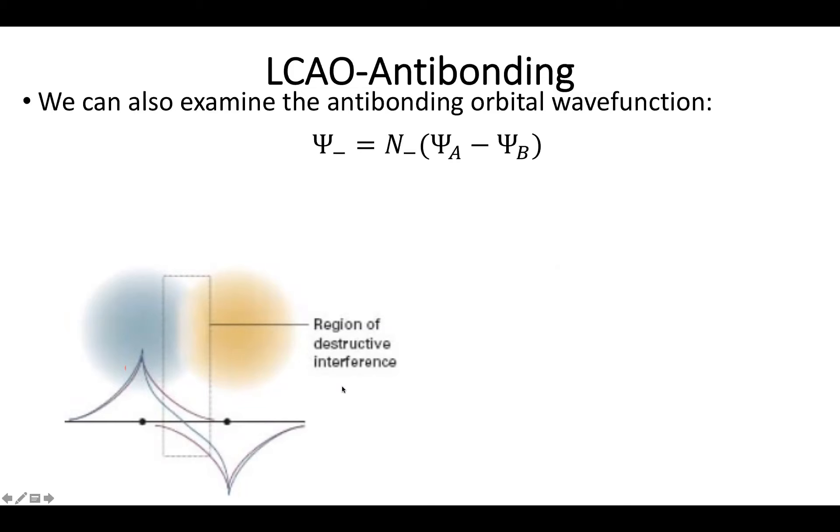When we subtract the two, we end up with this region of destructive interference with a wave function passing through a zero value in the middle. This will shift some of our extra density over to the exterior sides as modified by our new normalization constant.